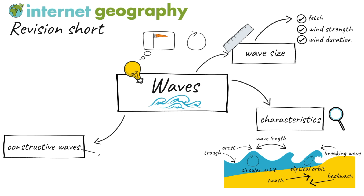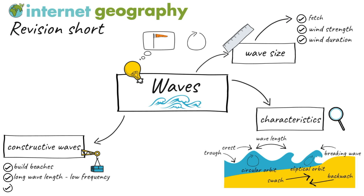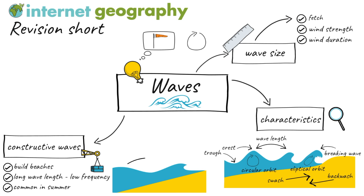Constructive waves build beaches. They have a long wavelength and low frequency, typically eight to ten waves per minute, and are more common in summer than in winter. Constructive waves are low, typically under one metre in height. The wavefront is gently sloping and gains little height, breaks and spills onto the beach. Water spreads a long way up the gently sloping beach due to its strong swash and carries material up the beach. The backwash is weaker, resulting in material being deposited on the beach. Constructive waves are often found in sheltered bays and spits, where they build up sandy beaches.